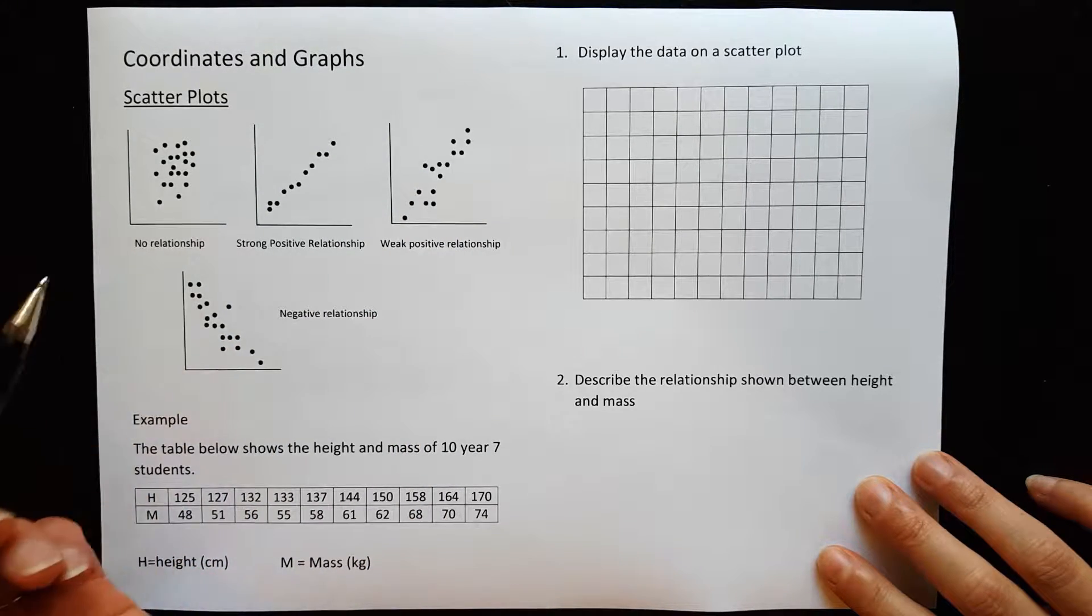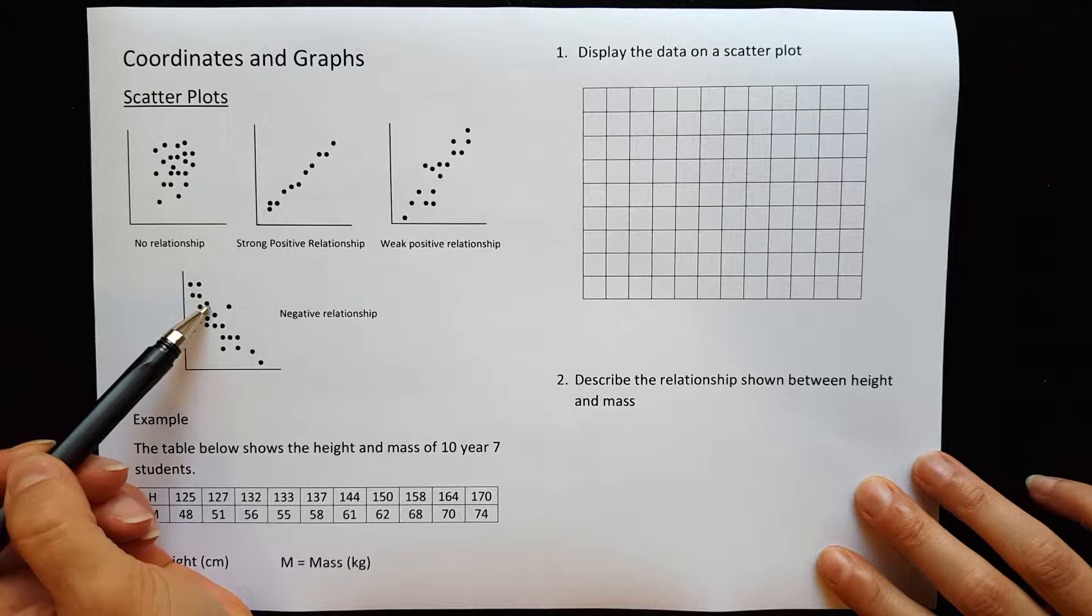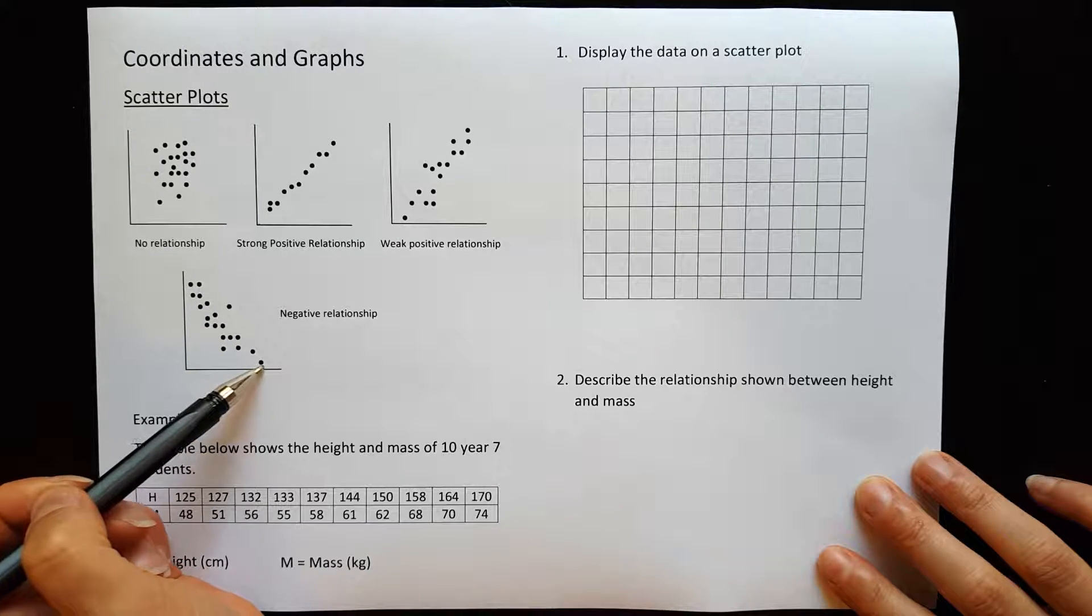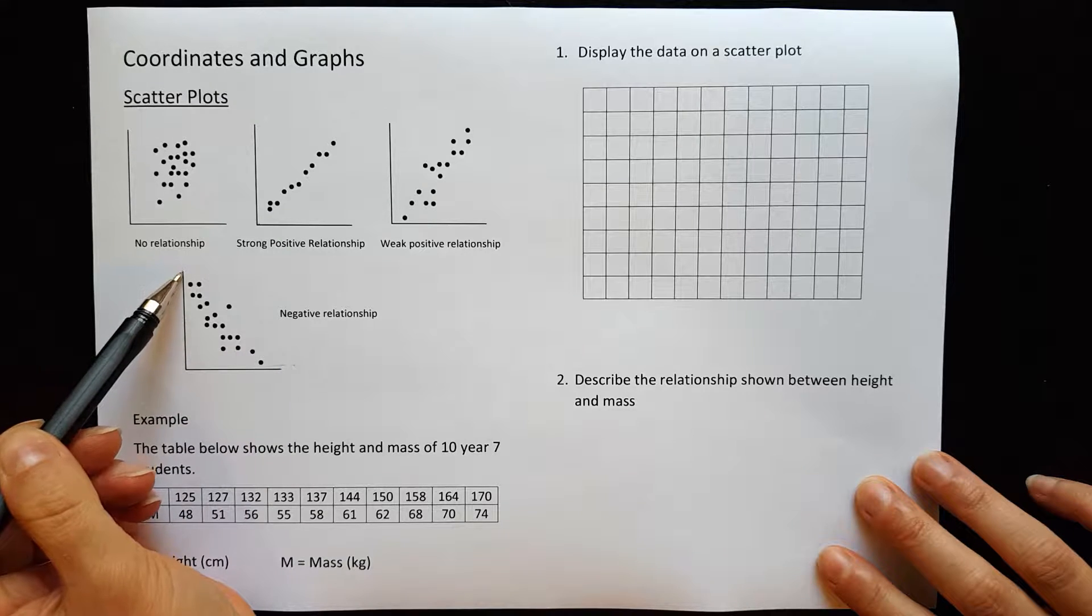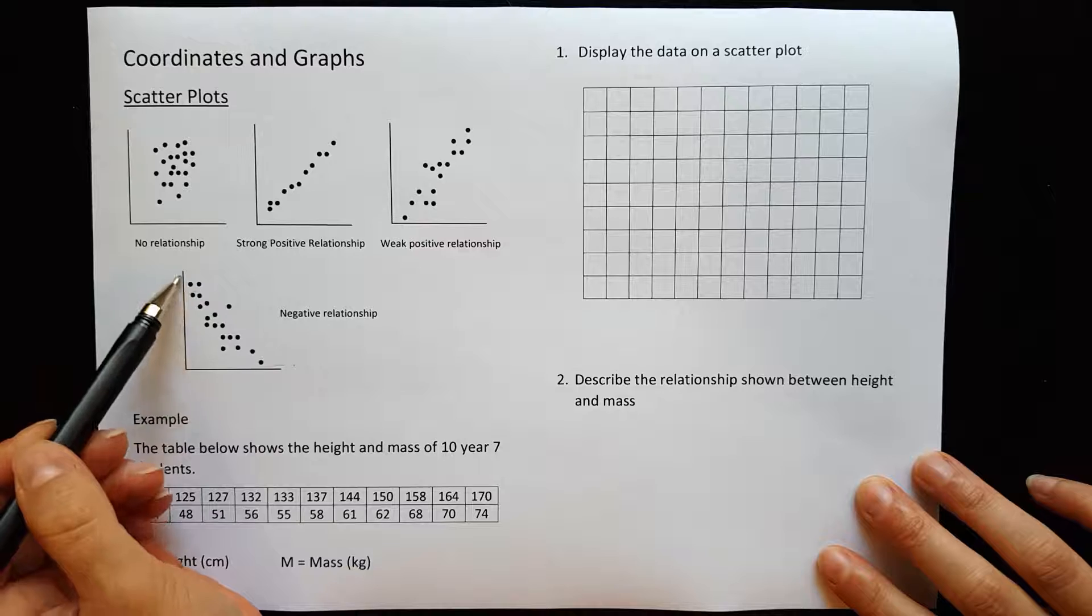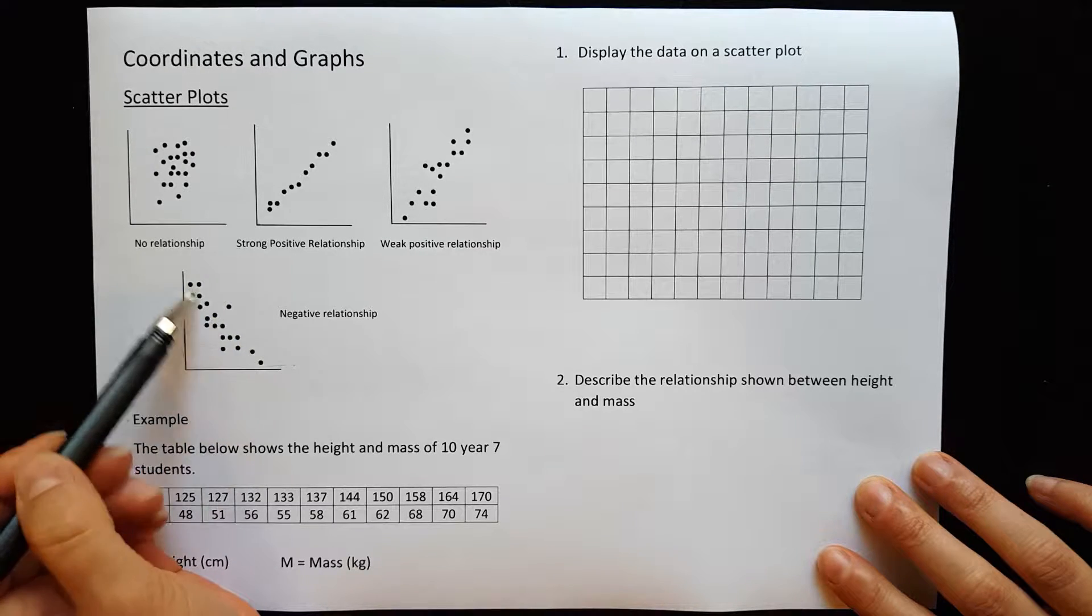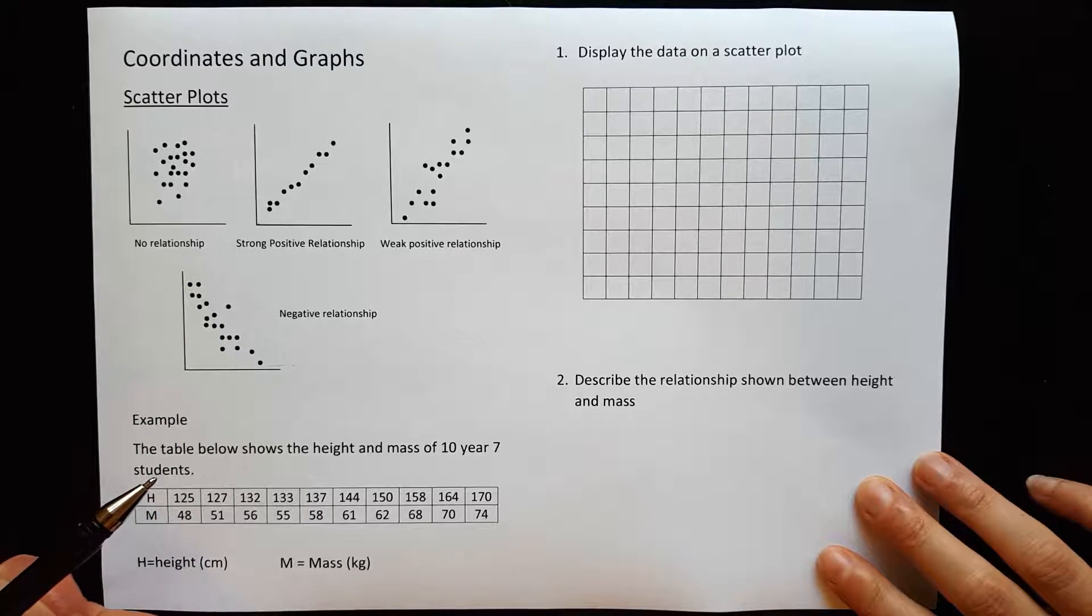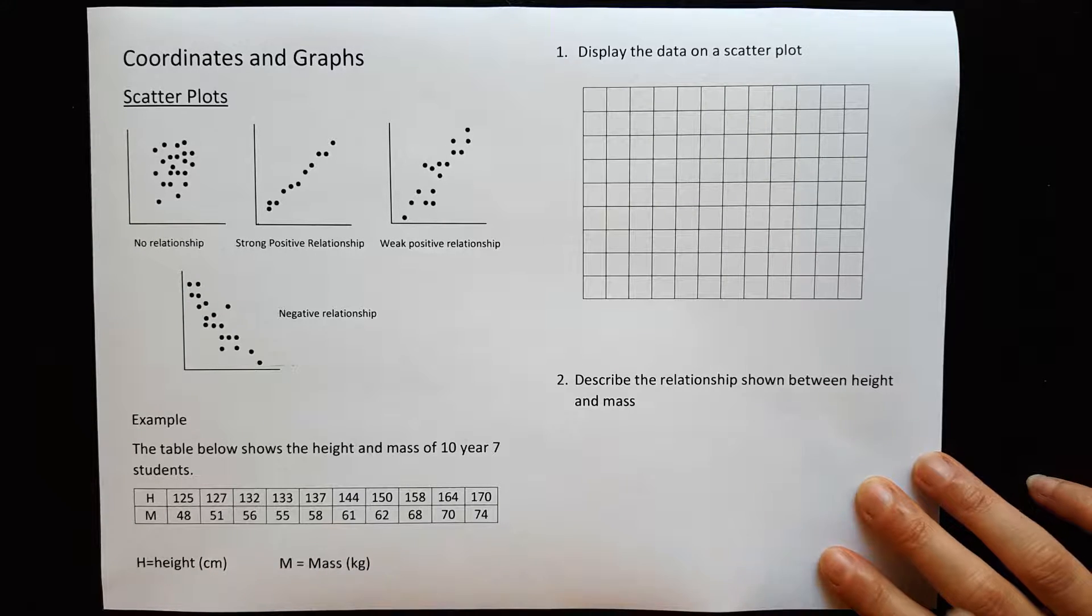This one however, you can see that this line is going the opposite direction. As this variable is increasing, going up here, the y variable is actually coming down, it's decreasing. This is a negative relationship. So we're going to draw a scatter plot today and have a look at the relationship that we find.